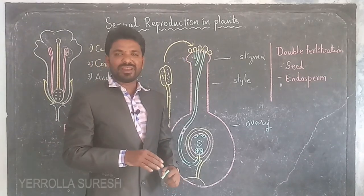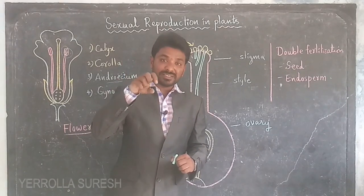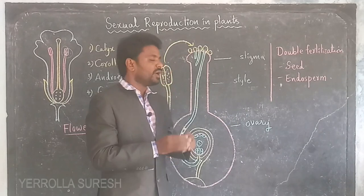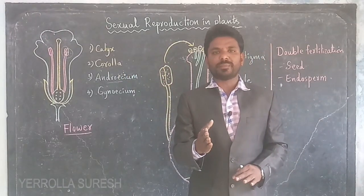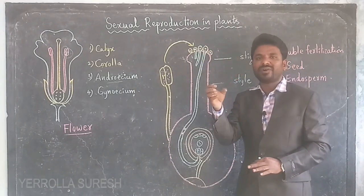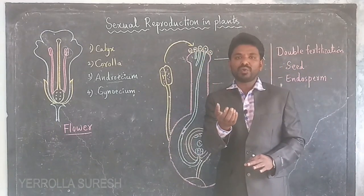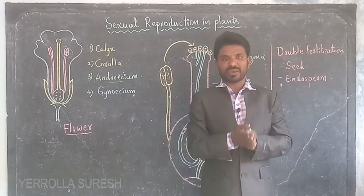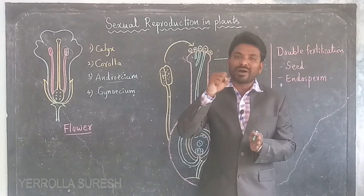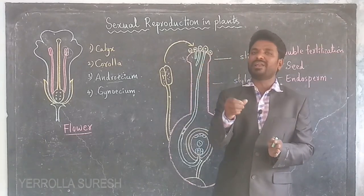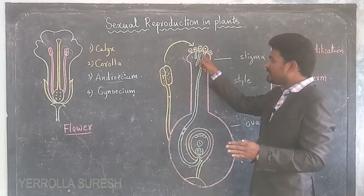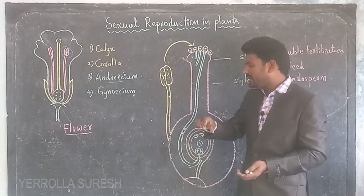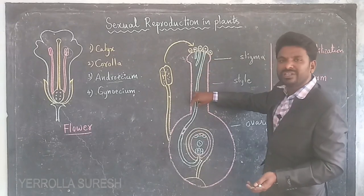Pollination may be of two kinds: self-pollination, where pollination occurs within the same flower, and cross-pollination, where pollen moves from one flower to another. After pollination, the pollen grains on the stigma develop pollen tubes. The liquid present on the stigma contains chemicals that initiate the development of the pollen tube. The nucleus inside the pollen grain divides, forming two nuclei.